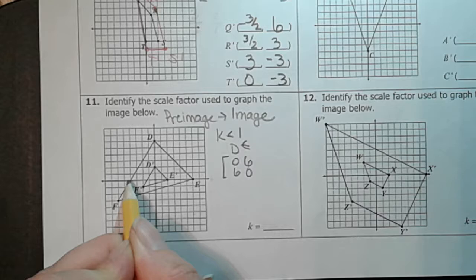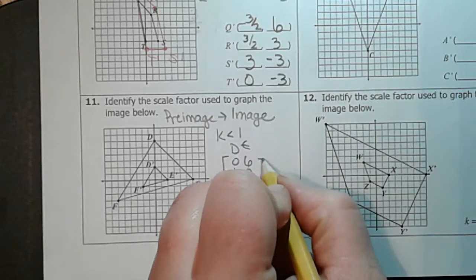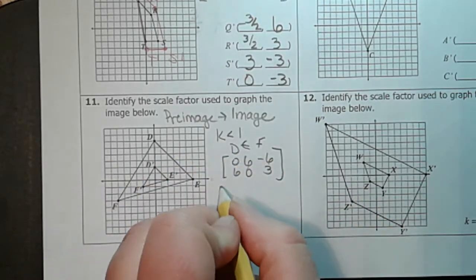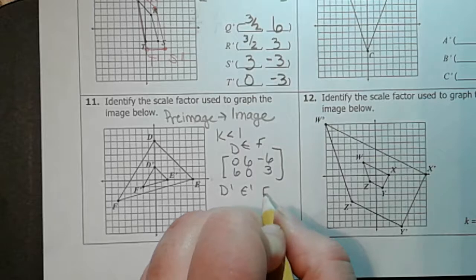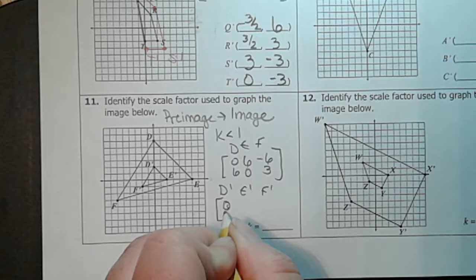And F, one, two, three, four, five, six. Negative six, three. All right, so D prime, E prime, and F prime. Well, D prime is at zero, two.